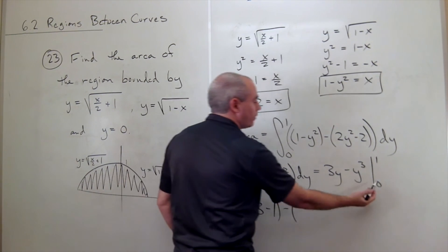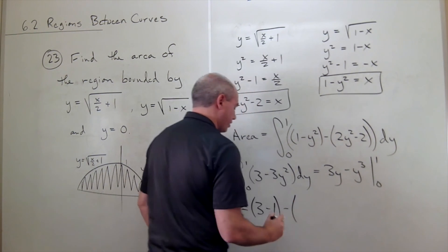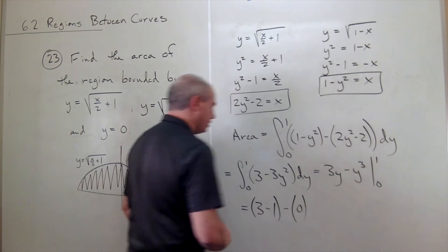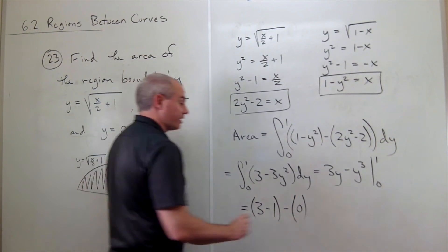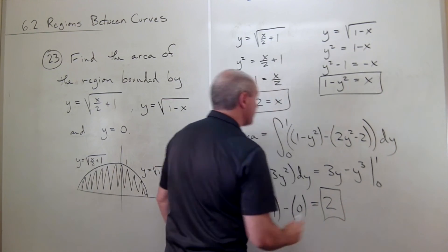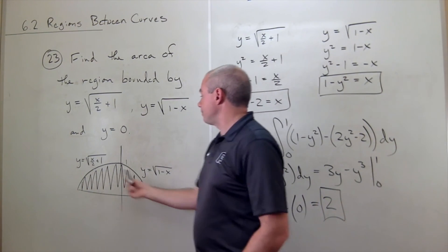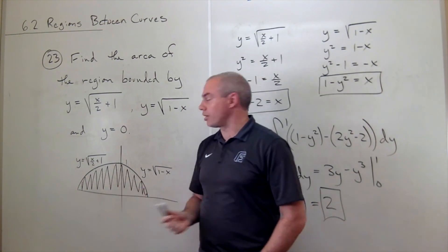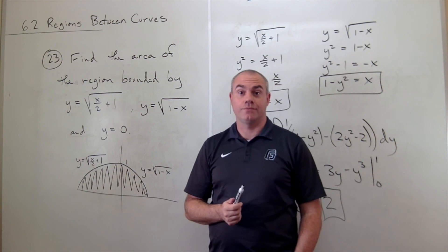Minus, if I plug in 0, I get 0 minus 0. So that's just 0. And so I end up with just 3 minus 1, which is 2. And the area trapped between these two curves is 2. Thank you.